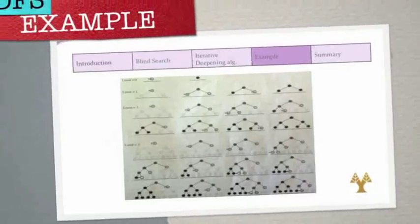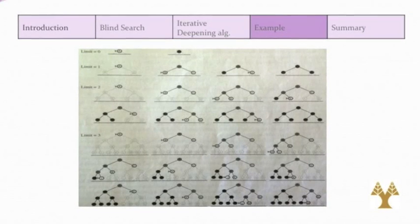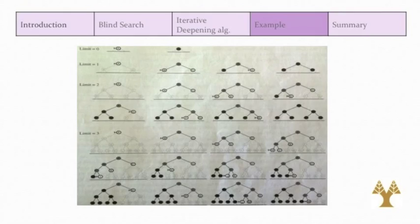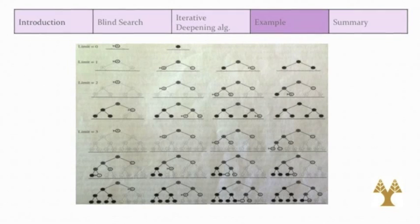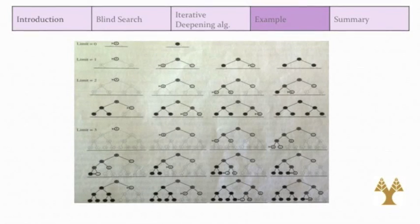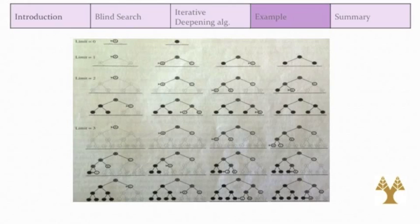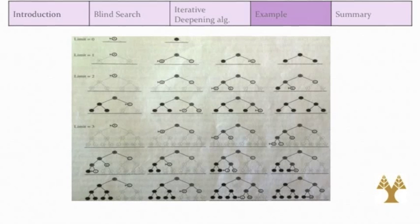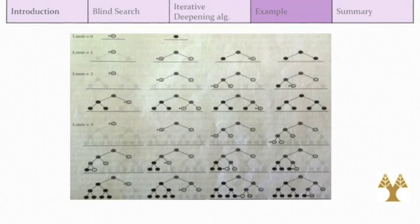Finally, I will explain an example to understand all the algorithms correctly. Here we have four iterations. In the first one, limit is zero, and we have only the main node of the tree, A. In the second iteration, limit is 1, and we have A, B, C. In the third iteration, limit is 2, and we have A, B, D, E, C, F, and G. In the fourth iteration, limit is 3, and we have A, B, D, H, I, E, J, K, C, F, L, M, G, N, and O.